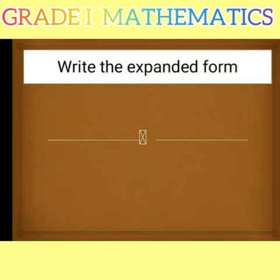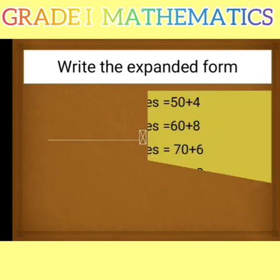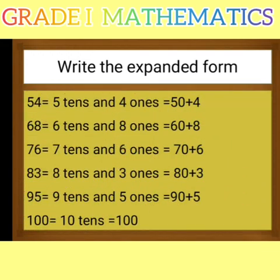And now, last one is write the expanded form. Expanded means we will expand the numbers. So here 54 means 5 tens and 4 ones. 5 tens means 50 plus 4. 54. Like this, 68 is 60 plus 8. And 76 is 7 tens and 6 ones. And we can write 70 plus 6 also. Like this, you can do this type of questions.